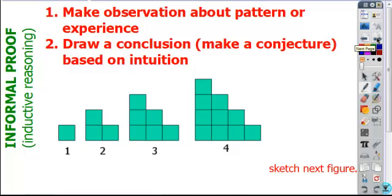Another type of proof that we're looking at is based on inductive reasoning, and that's informal proof. Informal proof is based on these steps: you make an observation about some pattern or experience, and then you draw a conclusion. Again, the conclusion that you draw is a conjecture at that time, which is an educated guess, and it's based on intuition.